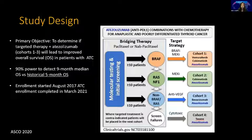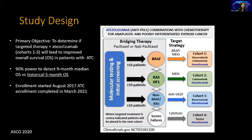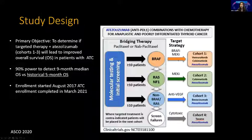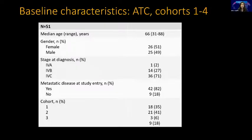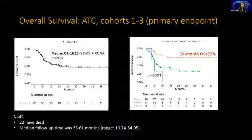Regarding combinations: this is our atezolizumab study presented at ASCO. We stratified patients by mutation status, then gave them targeted therapy plus immunotherapy based on their mutation — a collaboration with the Genentech Alliance. BRAF got the triplet; RAS and NF1 got a doublet of cobimetinib plus atezolizumab. We enrolled 51 patients, and the median overall survival in these patients was 18 months.